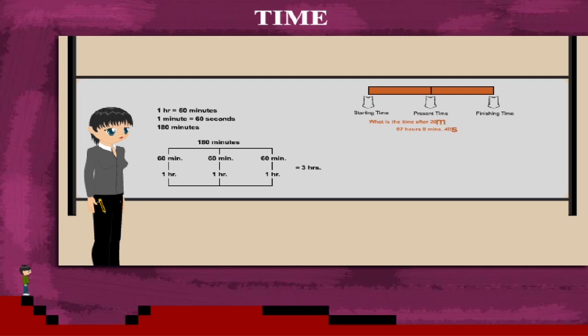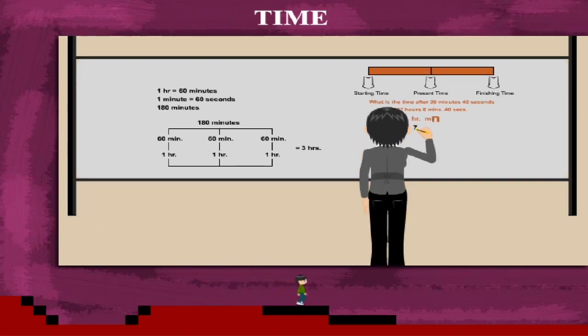She has a question. If the present time is 7 hours 8 minutes 40 seconds of an event, what will be the time after 20 minutes 40 seconds?